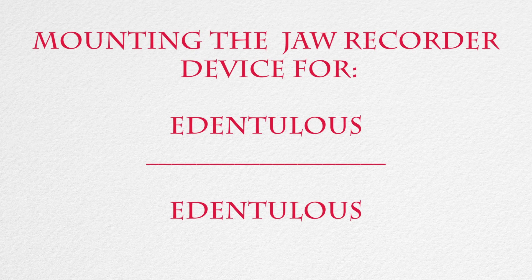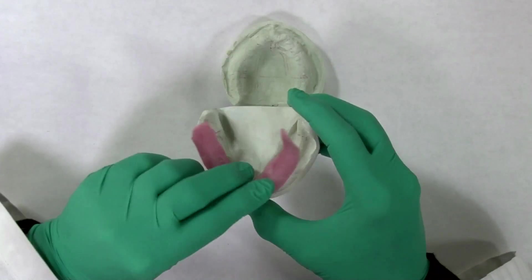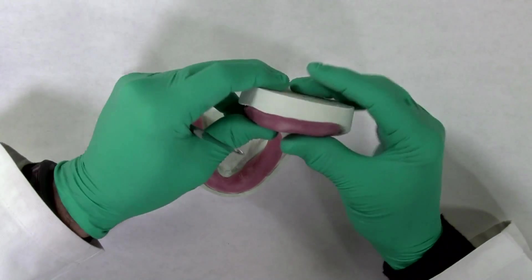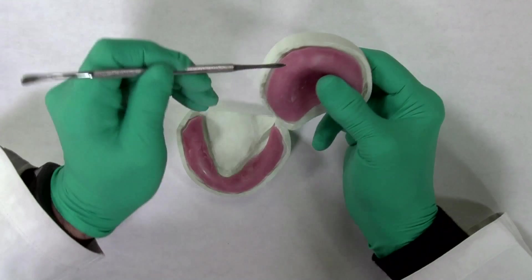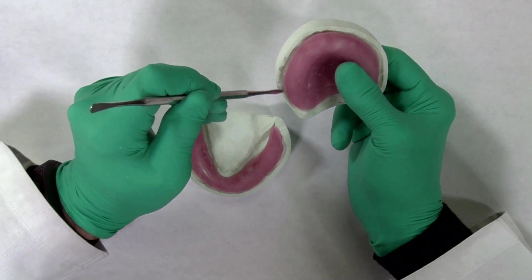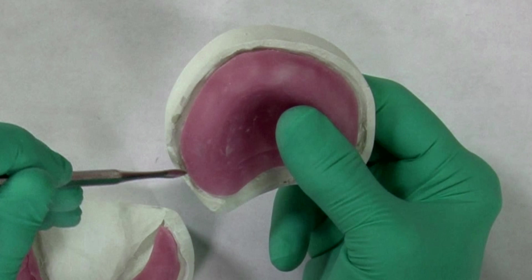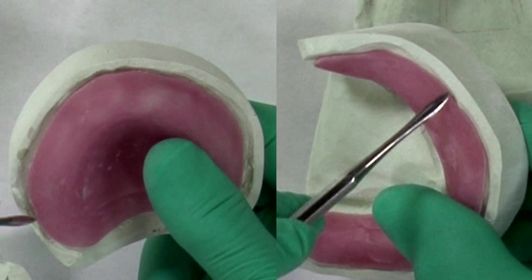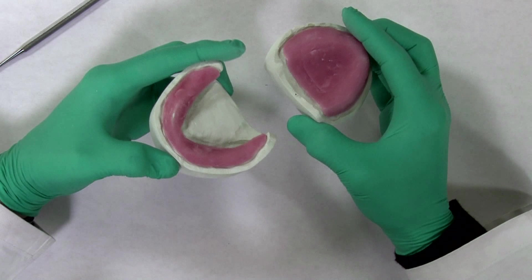Mounting the Mossad jaw recorder for the edentulous. A base plate is fabricated for both the upper and lower arches with a light cured tray material, with care taken to block out any significant undercuts. The base plates should also be slightly underextended in the vestibular areas. This is to eliminate any unwanted movement of the base plates caused by muscular or vestibular movements.